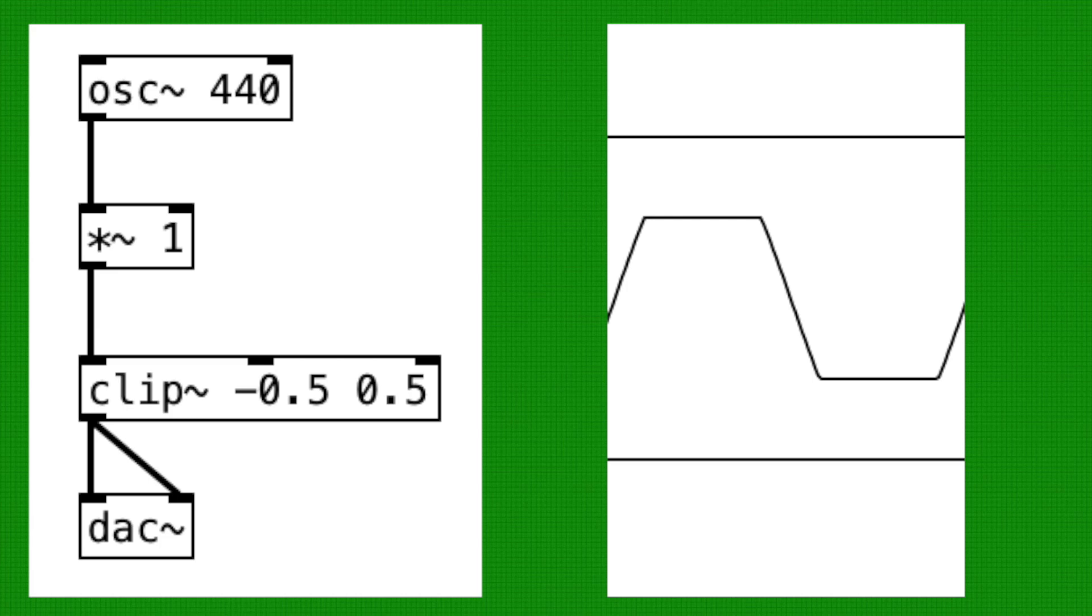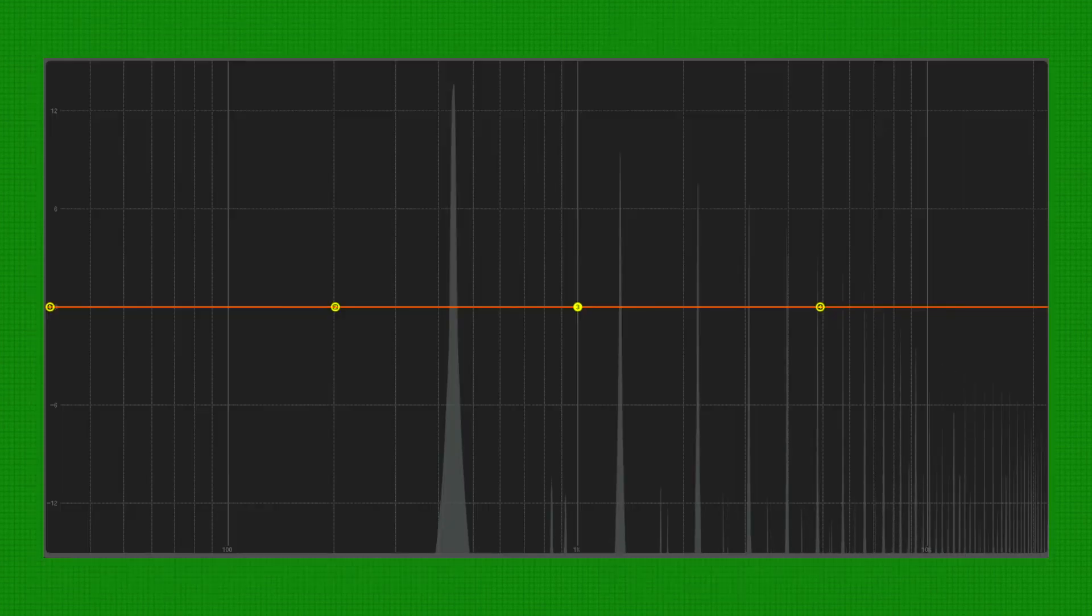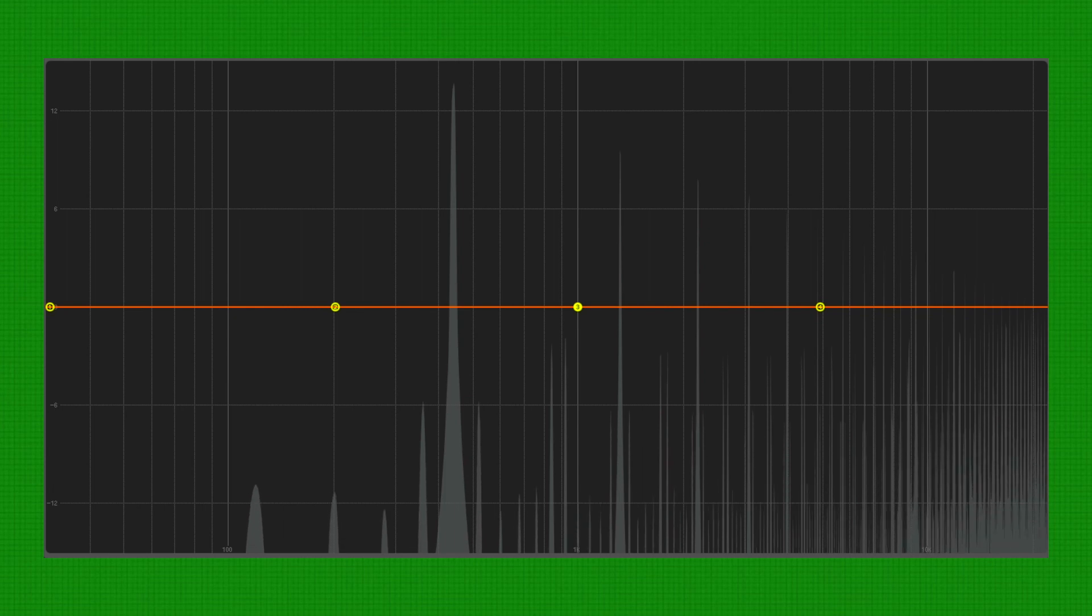Alright, so you may have noticed the change in sound quality of the oscillator when we clipped it. In short, clipping an audio will produce harmonics in the high frequency range. Therefore, clip object can add intentional distortion effect.